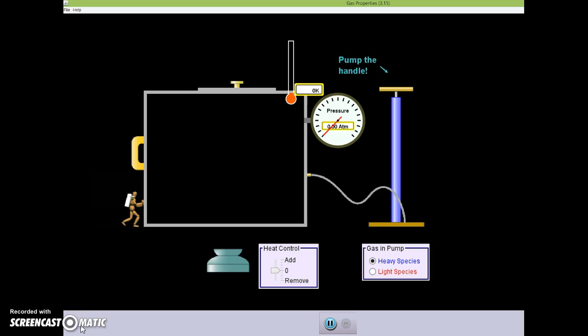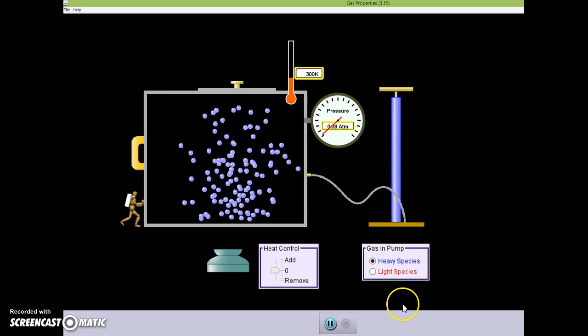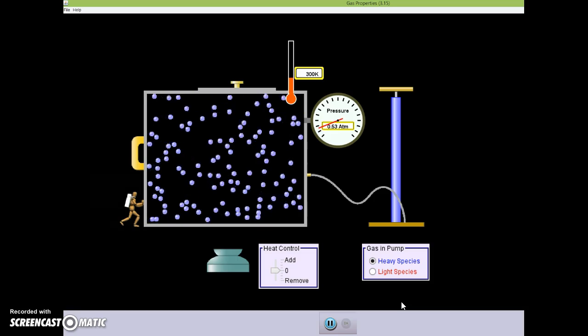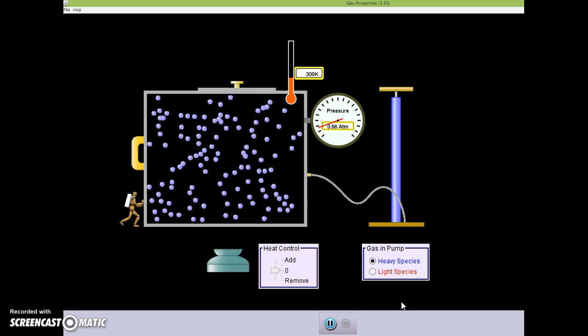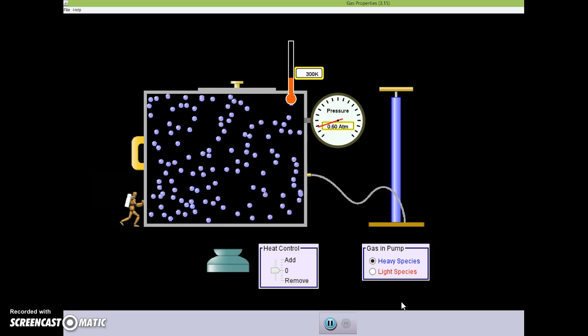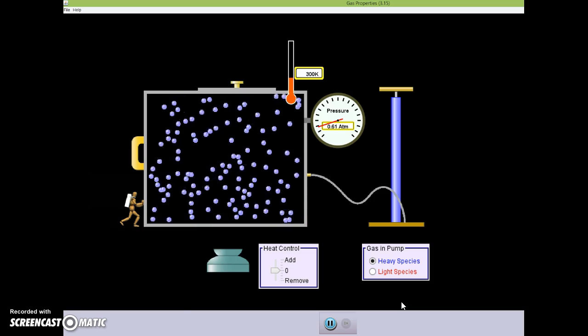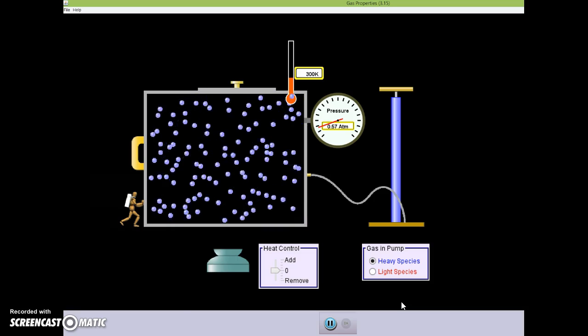Because gas particles are so small and we're unable to see them, we're going to use this animation to review the points of the kinetic particle theory. We have a closed container here connected to a bicycle pump. And if we pump the handle, we're going to force some air particles into the container. If you watch the particles for a moment, you can see evidence of point one of the kinetic particle theory. These gas particles are constantly moving. They move in a straight line until they hit another blue particle or the side of the container.